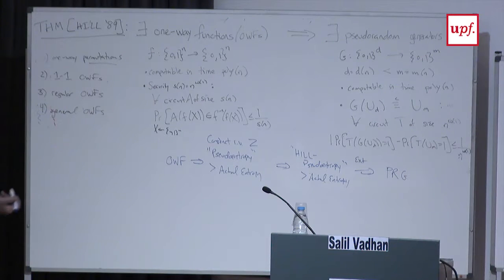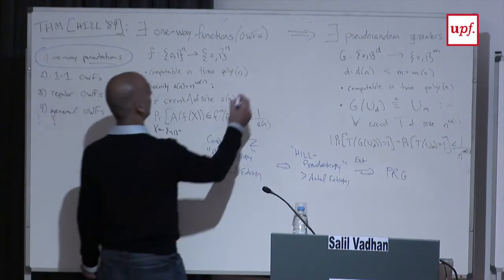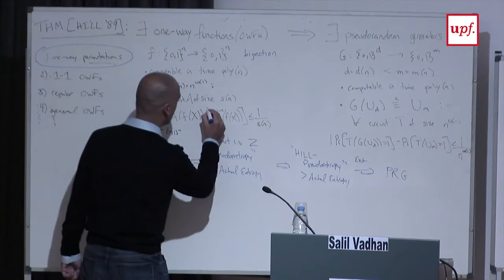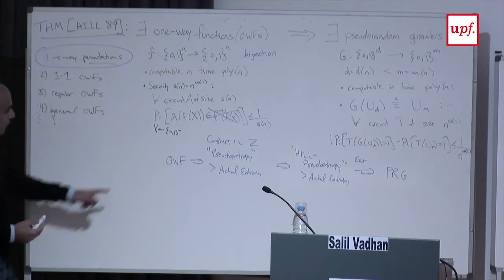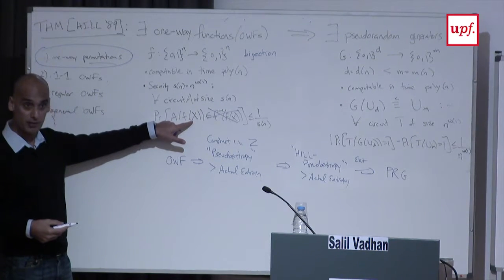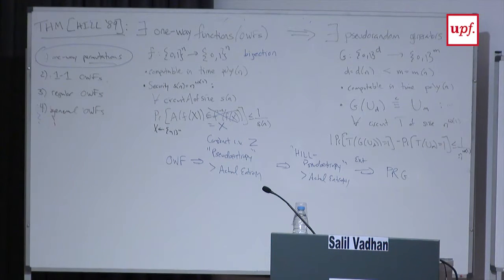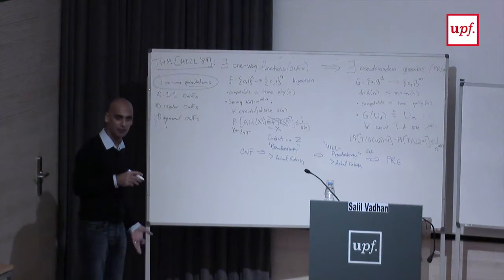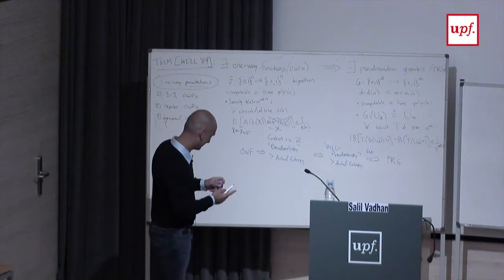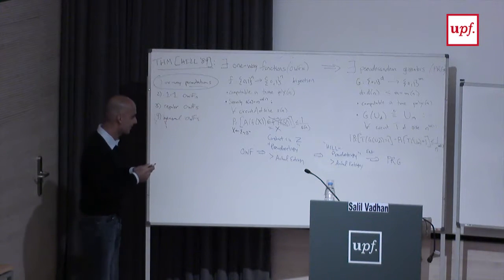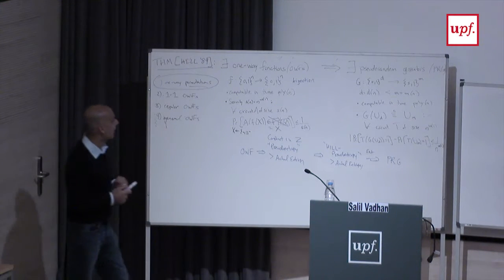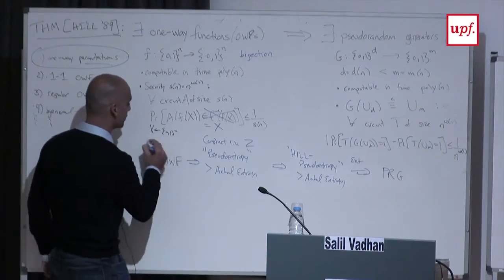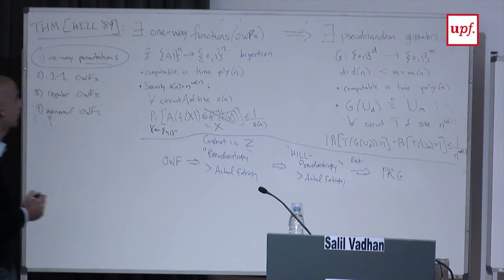Let's start with the first case: one-way permutations — a bijection. Finding a pre-image for a one-way function in general means finding any inverse. Since it's a bijection there's only one inverse, so the adversary's task is to find that unique inverse. How many people have seen one-way functions before? Good — so I don't need to give examples and candidates. Let's see how for one-way permutations we can do this first step of getting our hands on some kind of pseudo-entropy.